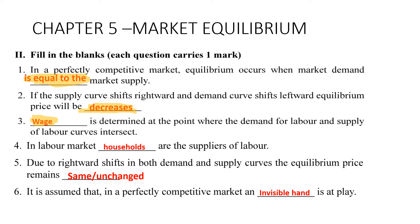Fifth: due to rightward shifts in both demand and supply curves, the equilibrium price remains the same — you can write either 'same' or 'unchanged.' Sixth: it is assumed that in a perfectly competitive market, an invisible hand is at play — a concept given by Adam Smith.